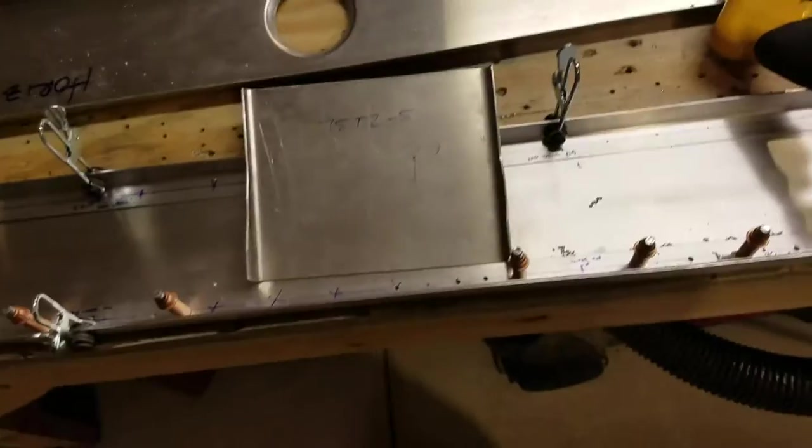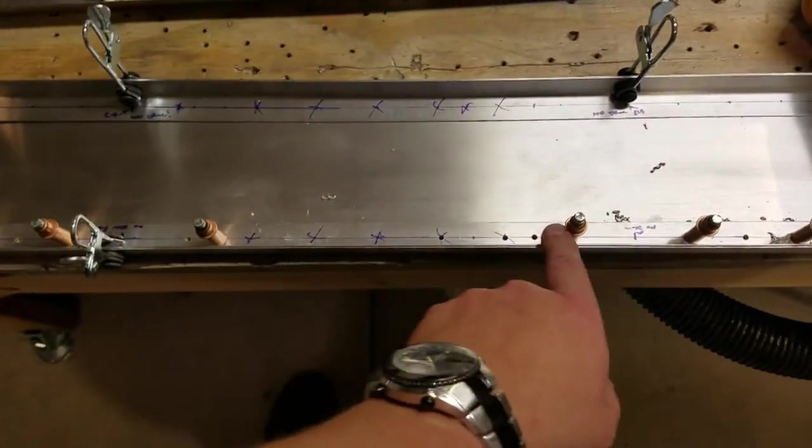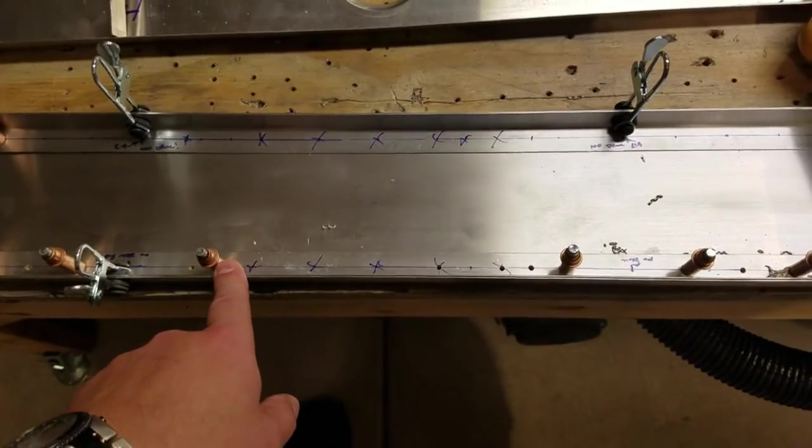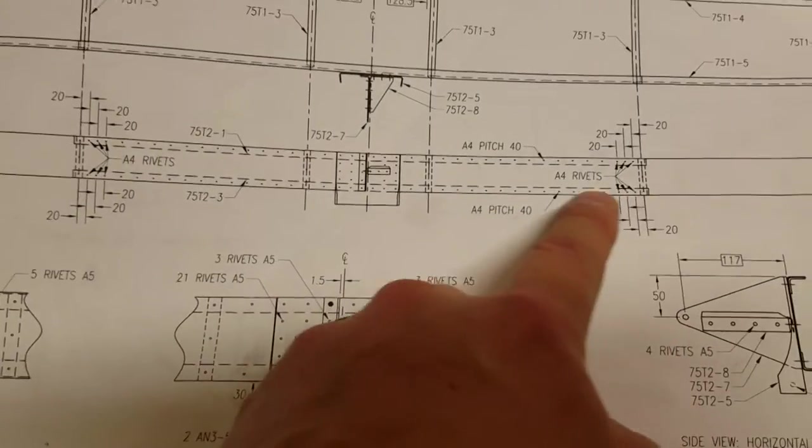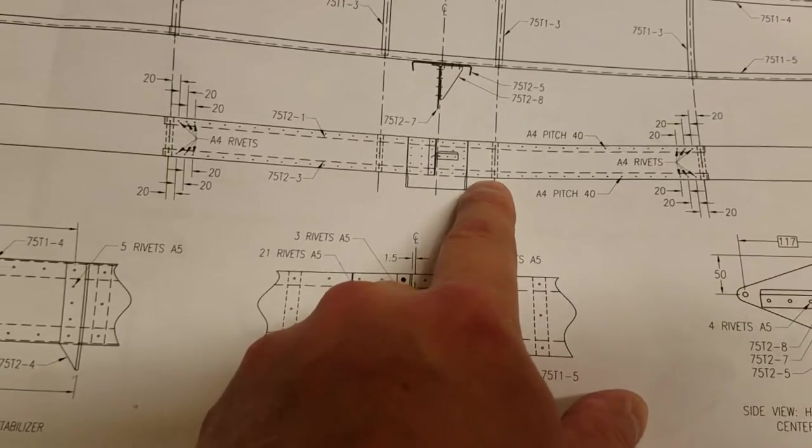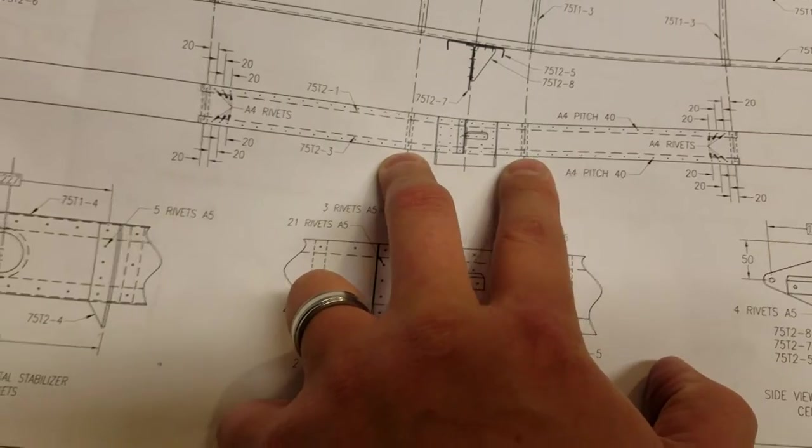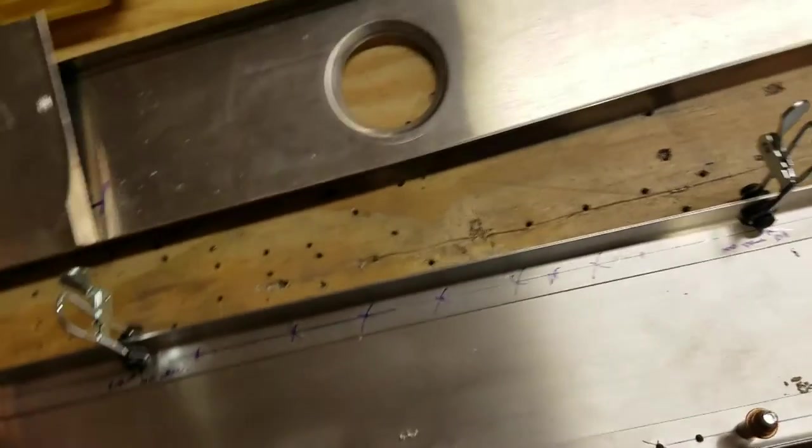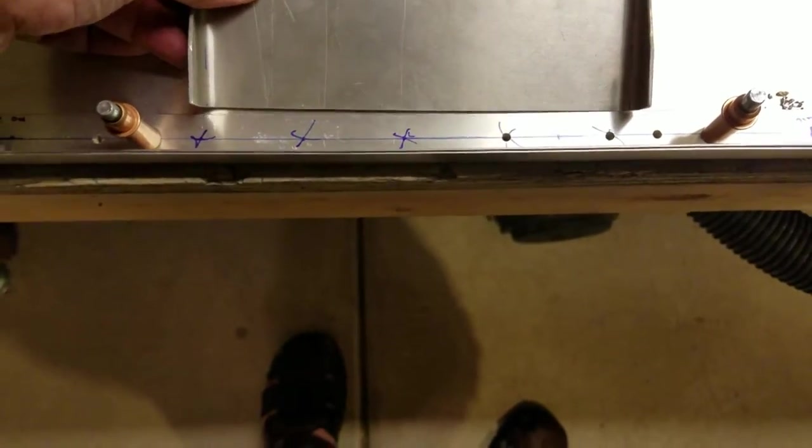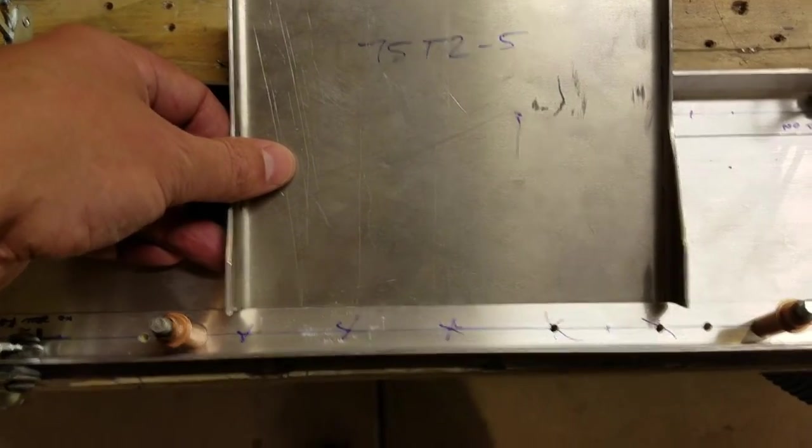This is the rear spar. In the previous video where I talked about rivet layouts, I had mentioned incorrectly that this section here had a 40mm pitch where the rear bracket goes between these rib stations. I actually marked that out and started to drill the first couple of holes through that position and quickly realized that something did not look right when I got to that point.